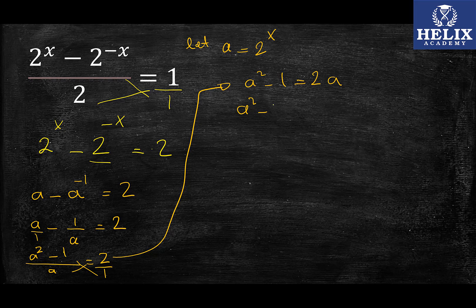Alright, so I'm just going to write everything on one side and make it look like a real quadratic. Now this can't be factored easily because there are no two numbers that will give me negative 1 and give me negative 2 as their addition.